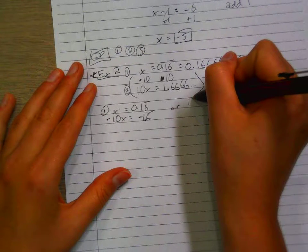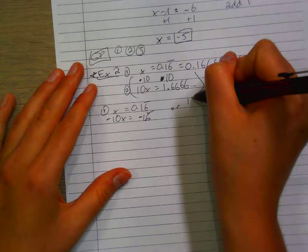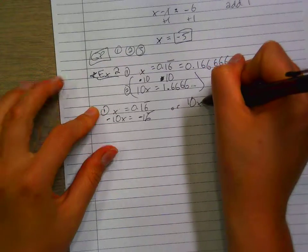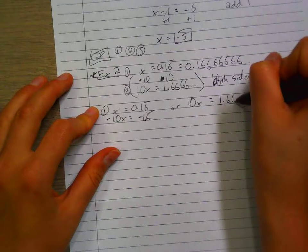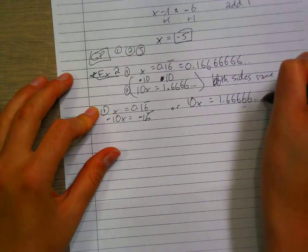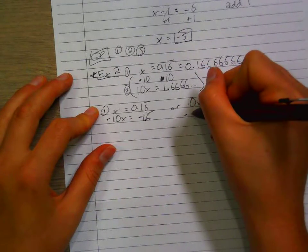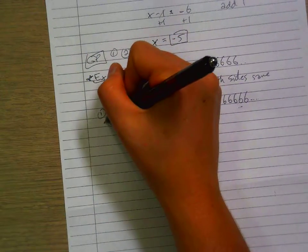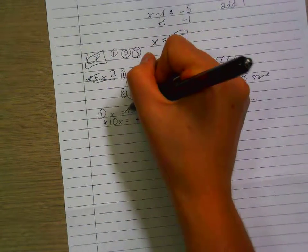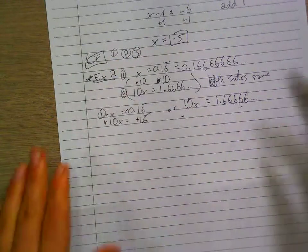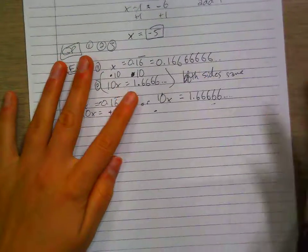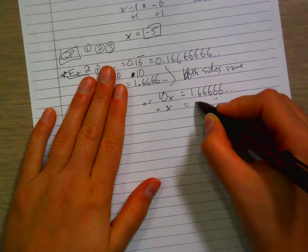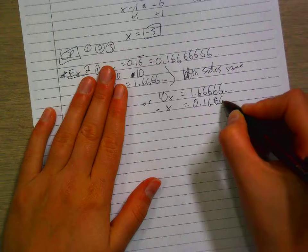So we will subtract the same thing from both sides. If we subtract 10x from this side and we subtract 1.6 repeating from this side, then it's going to be equivalent. So how we can do that is we'll write it out. So this is 10x equals 1.66666 minus. They're going to do these as positive and those as negative, which is fine because you're keeping both sides the same. Pay attention to this.